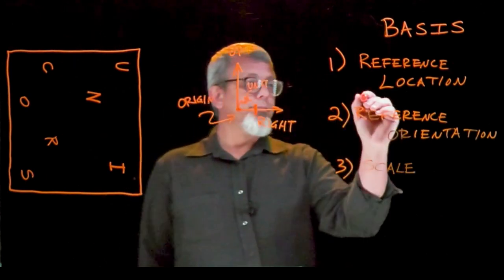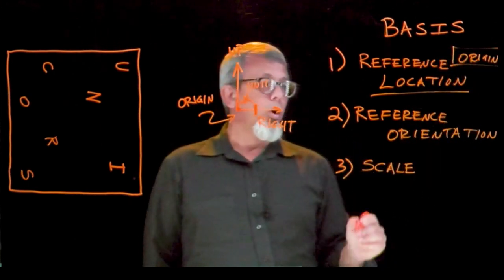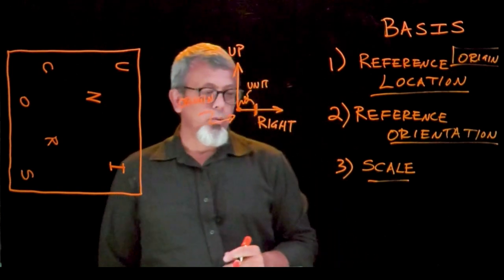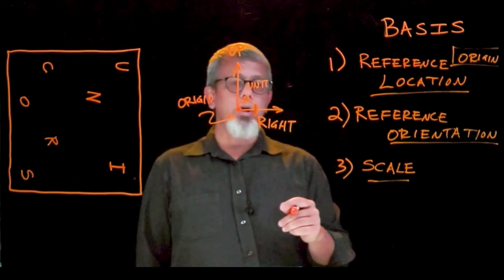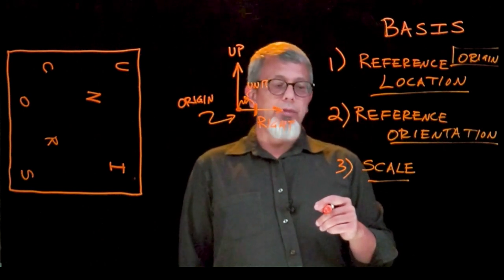Origin, our reference location, orientation, and scale. We will use each of these three as we define coordinate systems used to describe locations in two- and three-dimensional space.